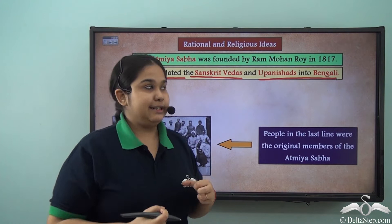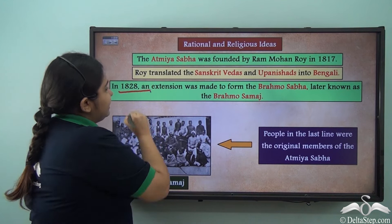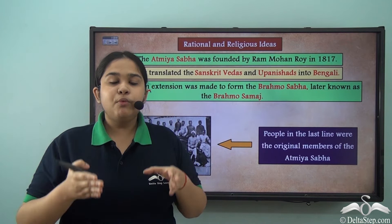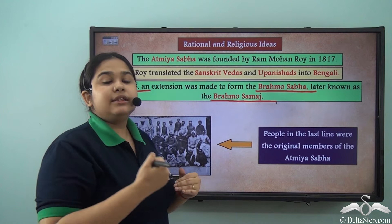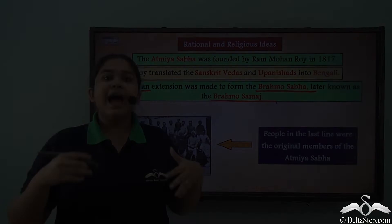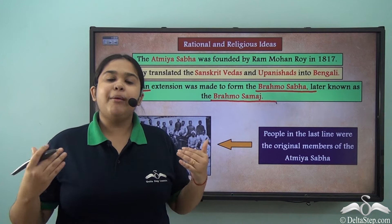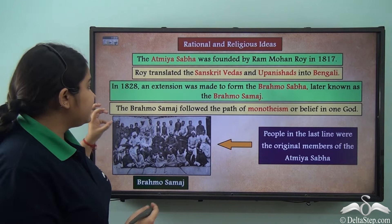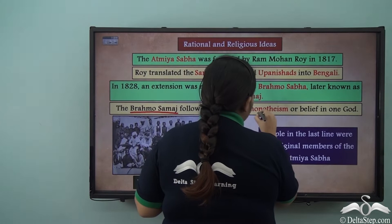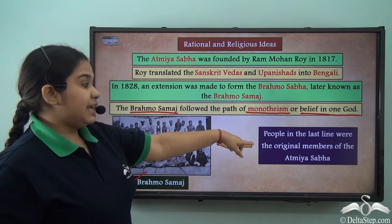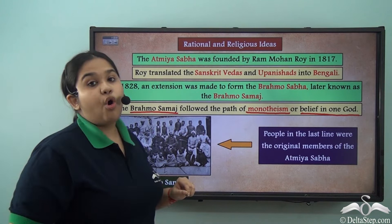In 1828, Raja Ram Mohan Roy went ahead with more organizational activities and established the Brahmosamaj — first as the Brahmosabha, which later came to be known as the Brahmosamaj. The idea was to bring forward Western education, curb social evils, and achieve an overall upliftment of the society. In this picture, we can see all the people of Brahmosamaj, including the original members of the Atmiya Sabha, which gave way to the Brahmosamaj.